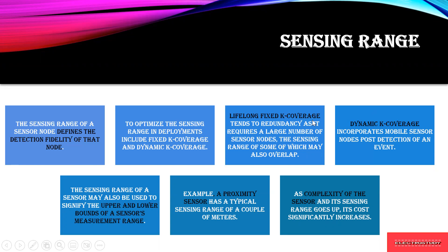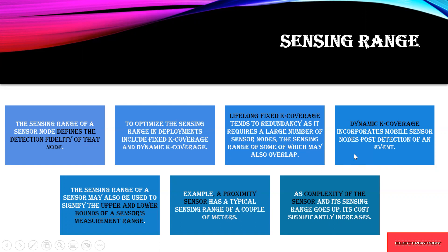With dynamic K coverage, it incorporates mobile sensors. Post-detection of an event — say, detecting the temperature of a particular room — after detecting, it incorporates a range that can be slightly differed and the values can be optimized. You will be setting an upper and lower bound for the sensor to measure. For example, a proximity sensor: how many meters can it measure? Based on the complexity of the sensor, the sensing range goes up. If you want to use it for a large industrial application, the complexity increases, the sensing range increases, and the cost also increases.